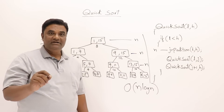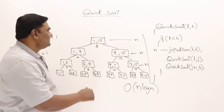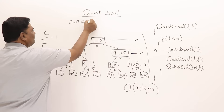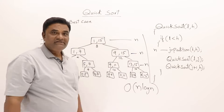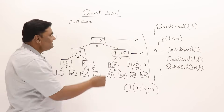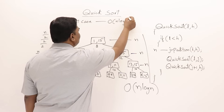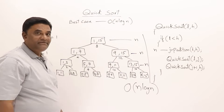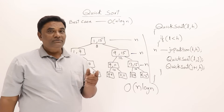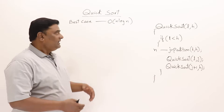This analysis assumes that partitioning is always done in the middle of the list. Under that assumption, the time complexity is O(n log n), and this represents the best case of QuickSort. The best case time of QuickSort is O(n log n), and this is achieved only when partitioning is done in the middle.